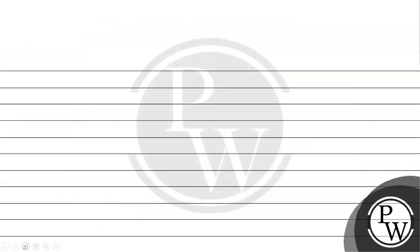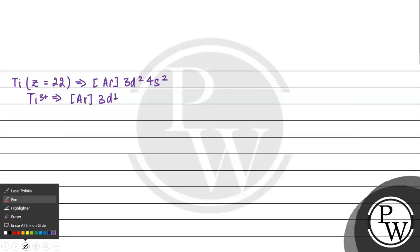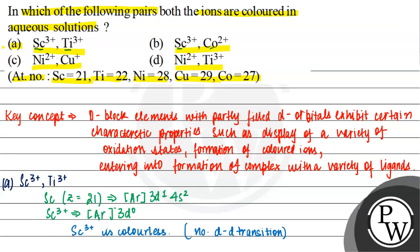Now let us talk about Ti³⁺. Titanium has atomic number 22, with electronic configuration [Ar] 3d² 4s². So Ti³⁺ has configuration [Ar] 3d¹, which gives a colored ion due to d-d transition. Since Sc³⁺ is colorless, option A is eliminated.